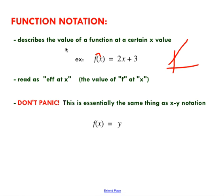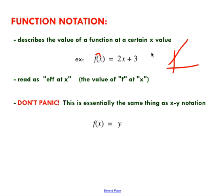Instead of f at x, I could just say y equals two x plus three — it's the exact same thing. Your f at x just refers to the value of your function, also known as the y value. So if you think about it: take an x, put it into your function, evaluate your function, and you're going to get a y out. That's your f — the value of your function.